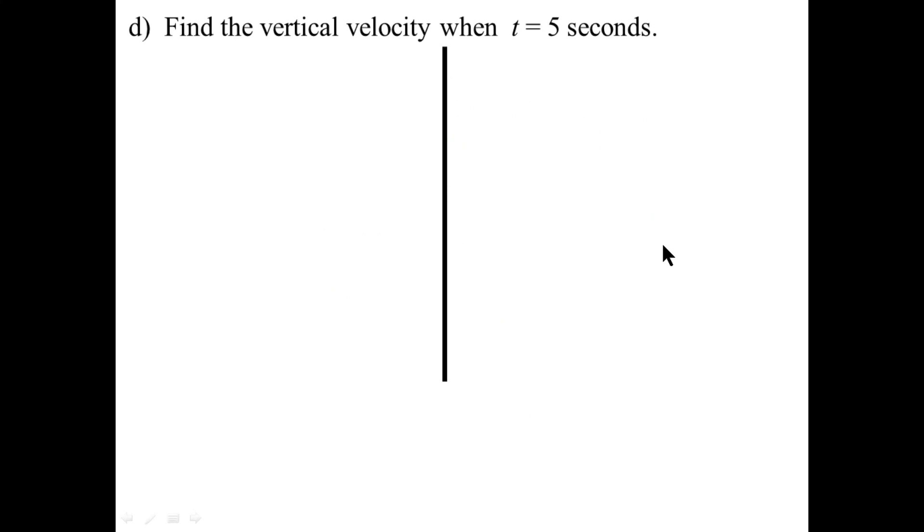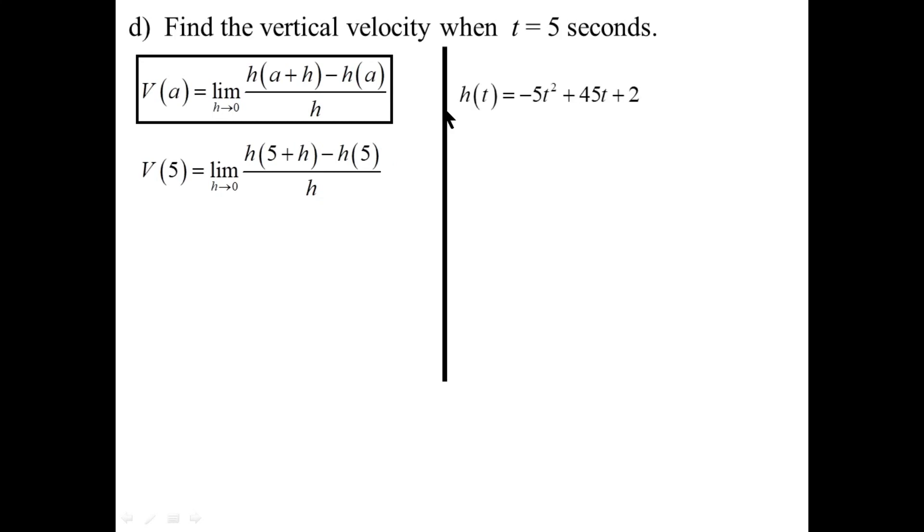Now, comes the big question. Find the vertical velocity at the very instant when t equals 5 seconds. So we'll have to take the instantaneous velocity equation, which is a limit as h approaches 0. And notice that it says t equals 5 seconds. So a is 5. So it will be h of 5 and h of 5 plus h gets plugged in here. And this looks like the formula where we need to prep before we sub in. So let's do the prep.